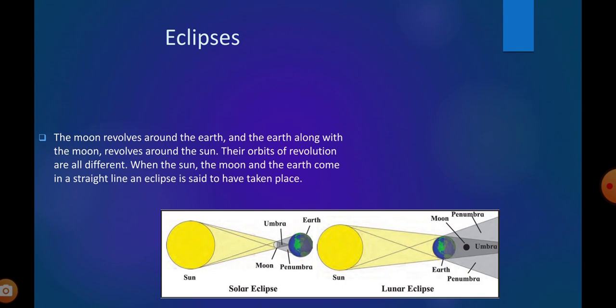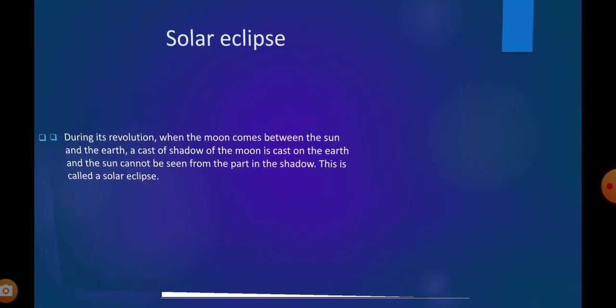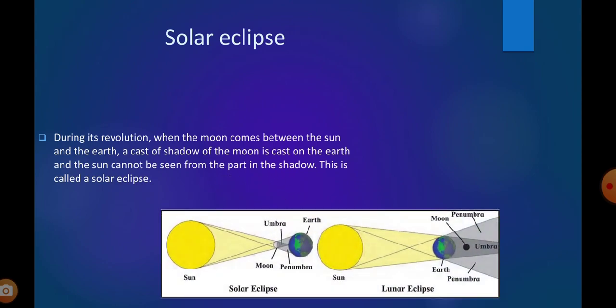Solar eclipse. Solar eclipse happens when the moon comes in between sun and earth. During its revolution, when the moon comes between the sun and the earth, a shadow of the moon is cast on the earth and the sun cannot be seen from the part in the shadow. This is called a solar eclipse.